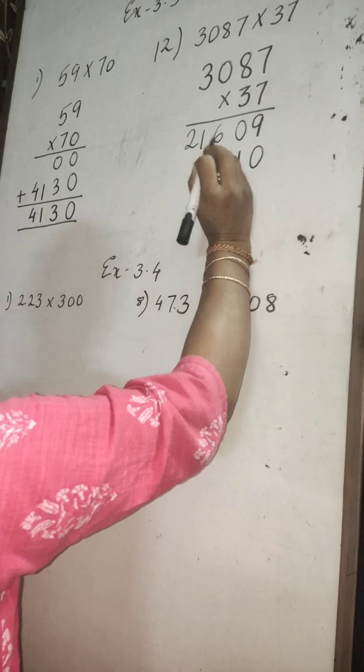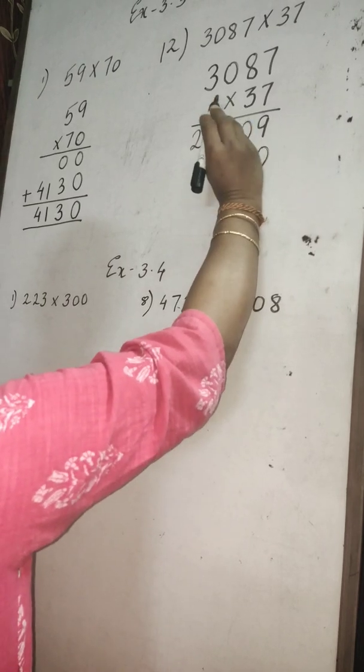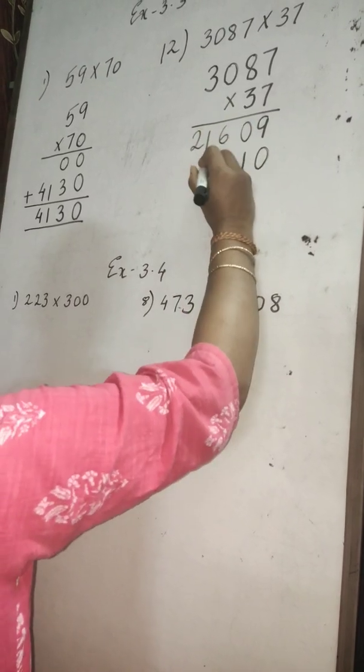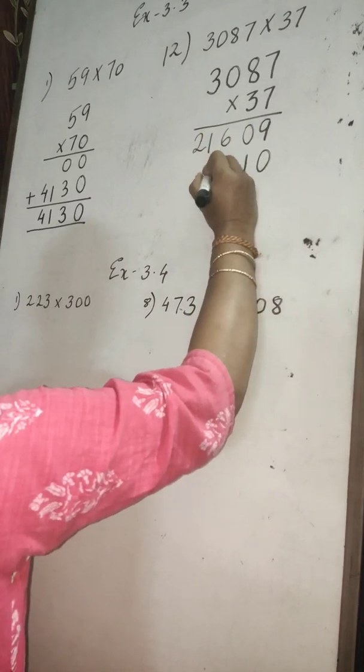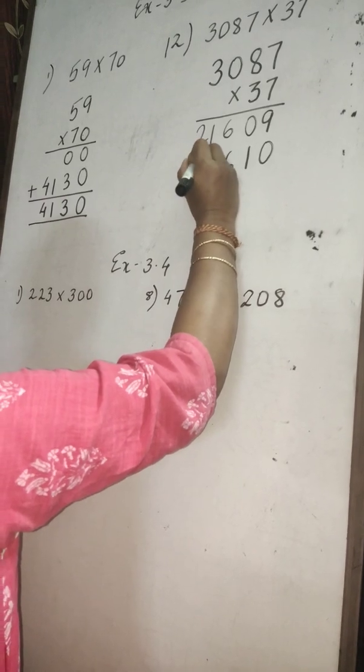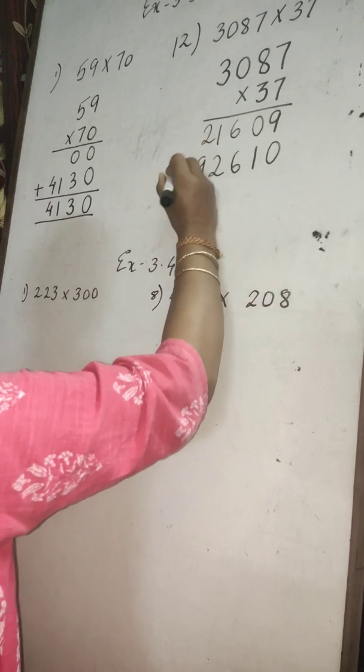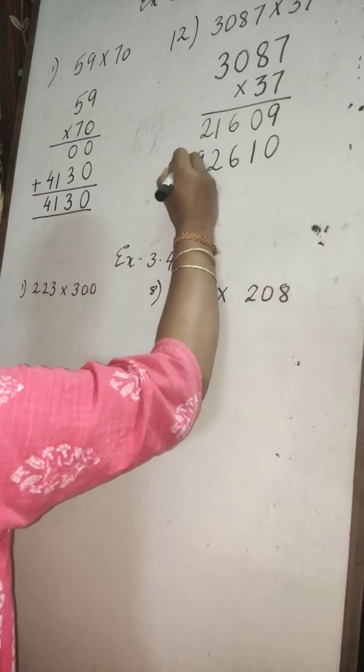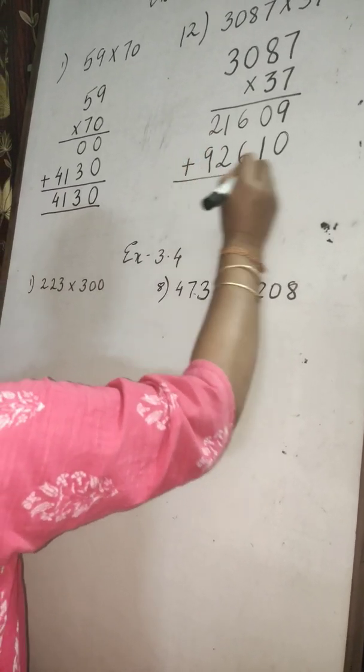2 will carry. 3 times 0 is 0 plus 2 is 2. 3 threes are 9. Now add it.